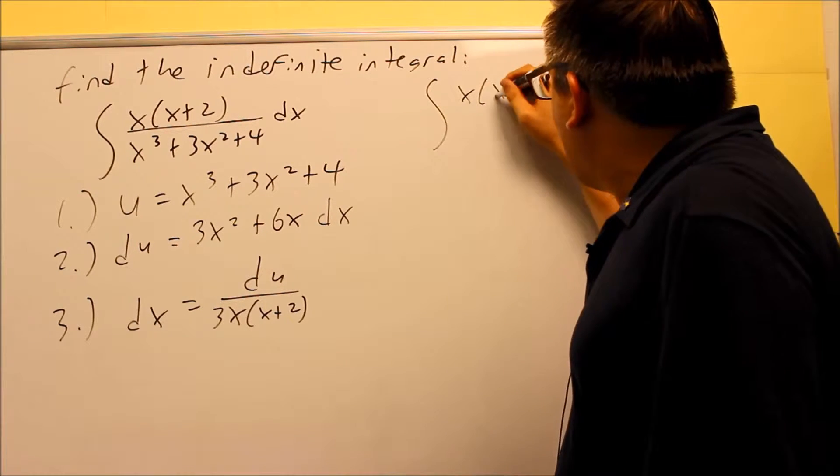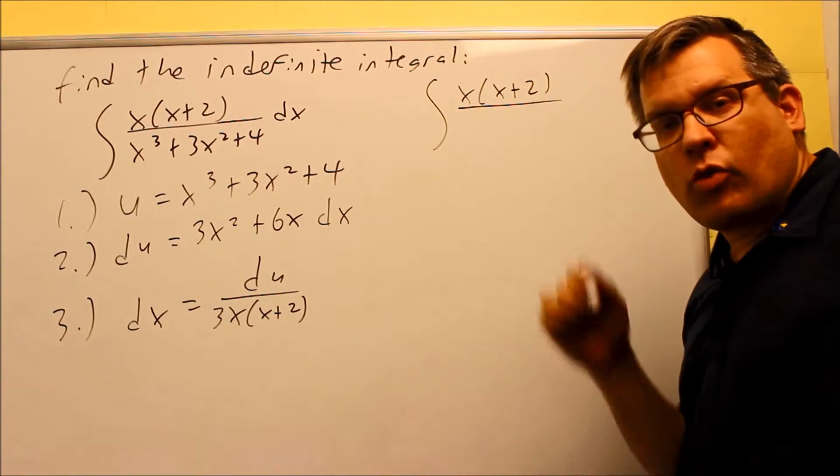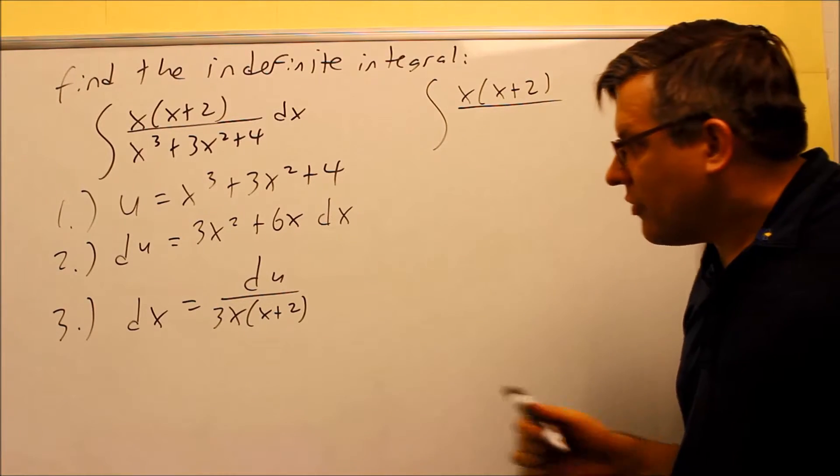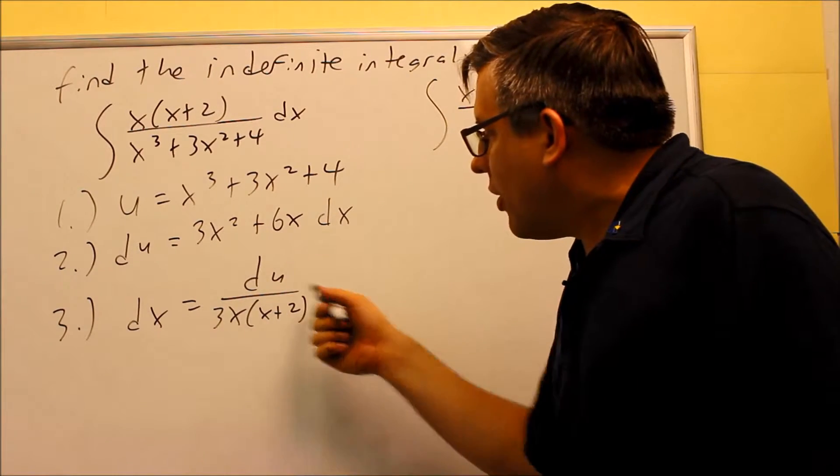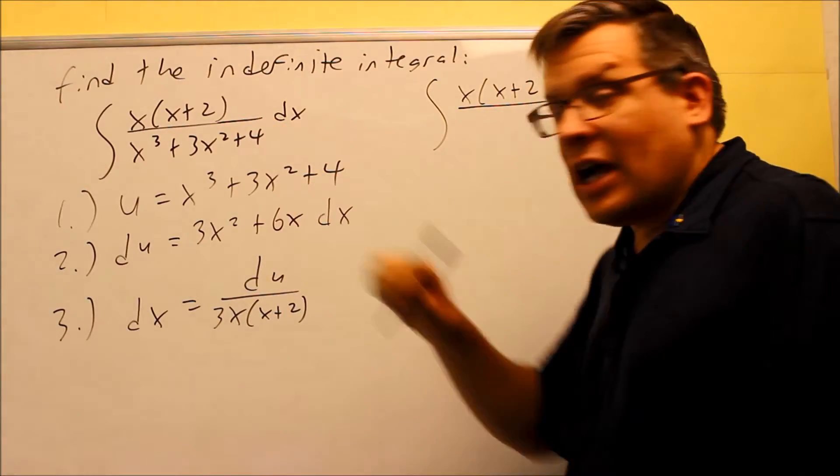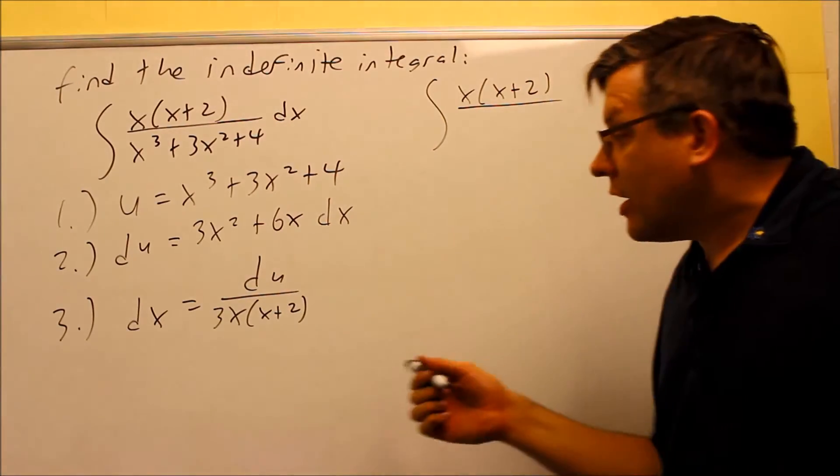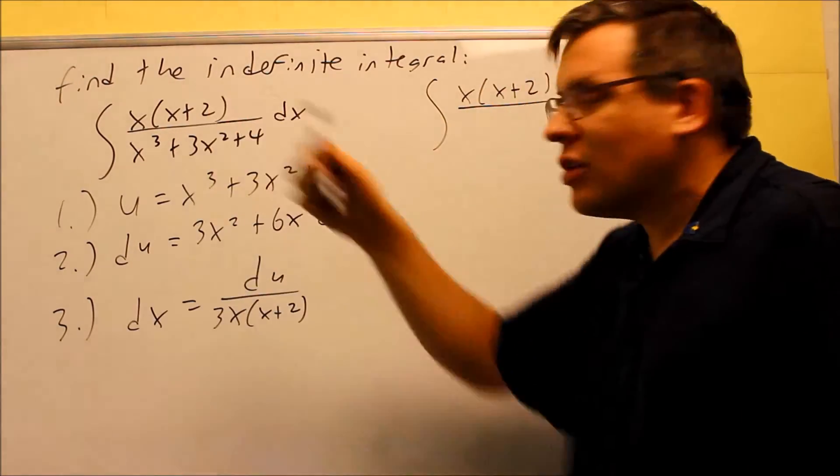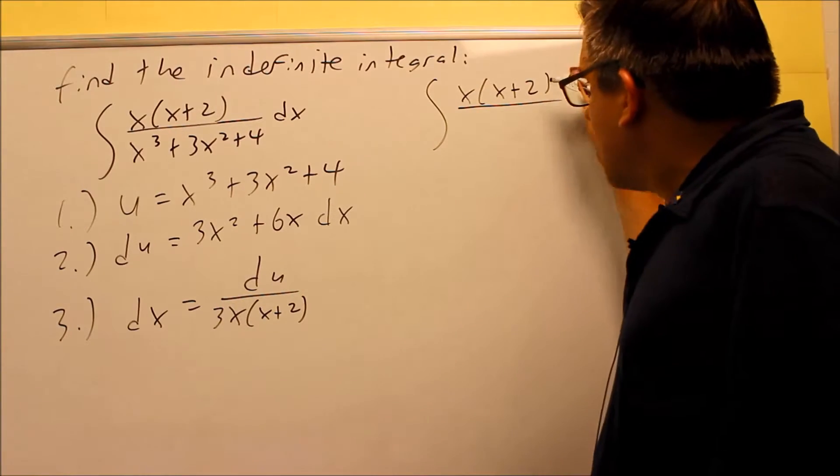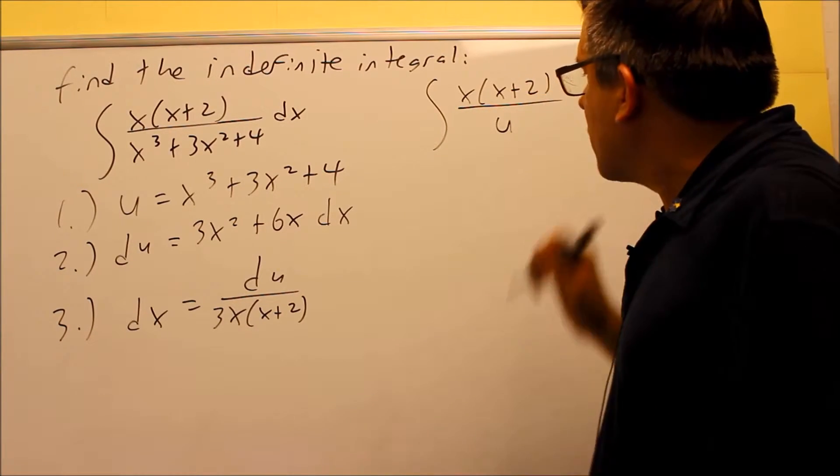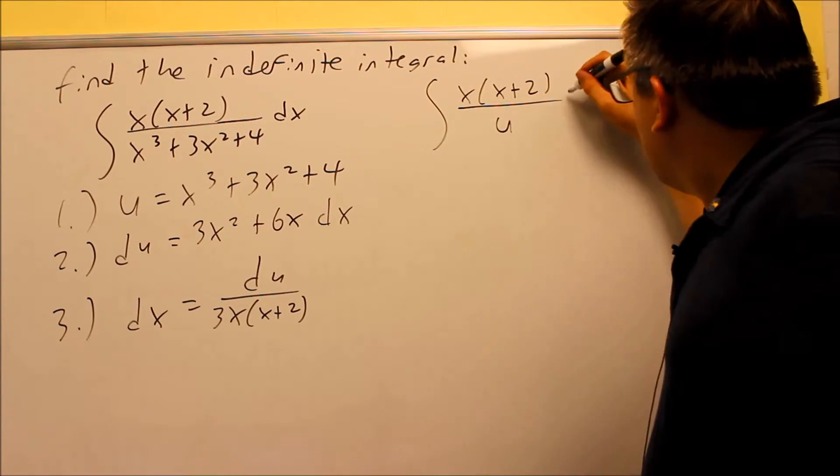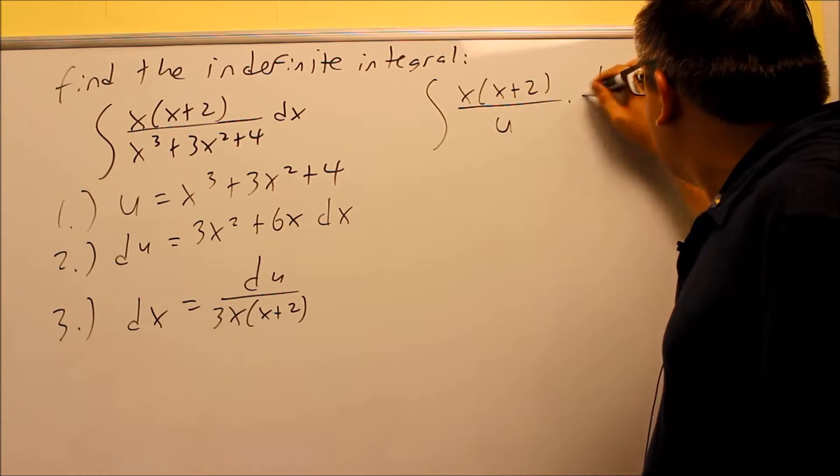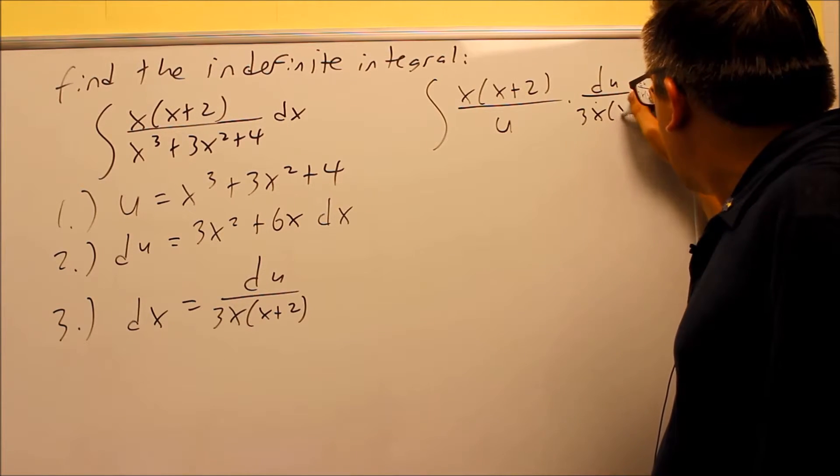And so now I have x and x plus 2, and I'll be able to see more clearly what's going to cancel out there. If I didn't have it in the factored form, I might not think it canceled out with the top one, so that's why I wanted to go ahead and do this step to see that it does match the top. So up in the bottom, this whole thing is going to be a u. And then instead of dx, I have du over 3x and then x plus 2.